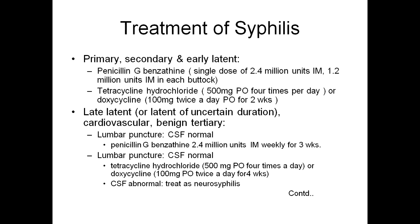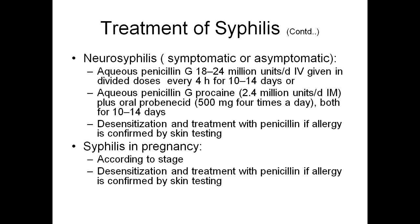If lumbar puncture shows CSF is normal you can give tetracycline hydrochloride, but if it is abnormal then you have to treat the patient as a case of neurosyphilis. For neurosyphilis you require aqueous penicillin G, because it can cross the blood-brain barrier — Benzathine G penicillin cannot cross it. Aqueous penicillin G: 18 to 24 million units IV given in divided doses every four hours for 10 to 14 days, or procaine penicillin G can be given.